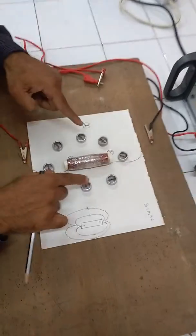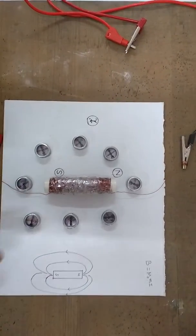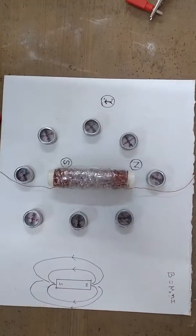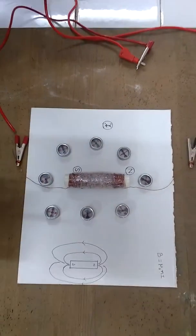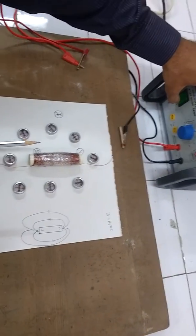And here I have taken small compass needles. These compass needles will tell me whether there exists a magnetic field around this or not. So now I'm going to switch on. Let us see. So this is switched on.